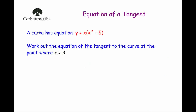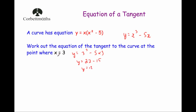So let's have a look at one last example. A curve has the equation y equals x bracket x squared minus 5. We've been asked to work out the equation of the tangent to the curve at the point where x equals 3. There are two things slightly different here: first, we need to expand the equation to get y equals x cubed minus 5x. Second, we've only been given the x value, not the full coordinate. So I'm going to substitute x equals 3 to find y: y equals 3 cubed minus 5 times 3, which is 27 minus 15, so y equals 12.